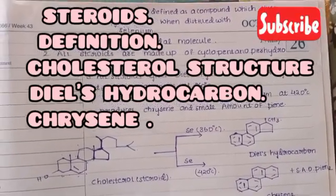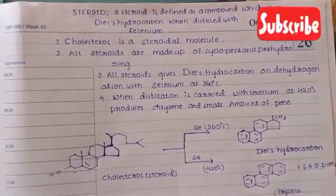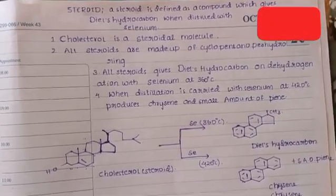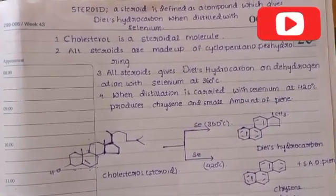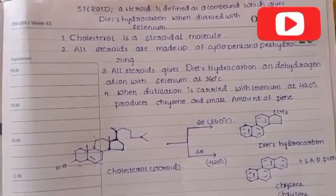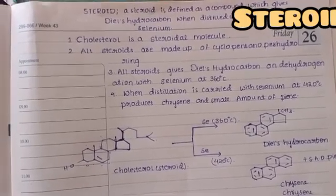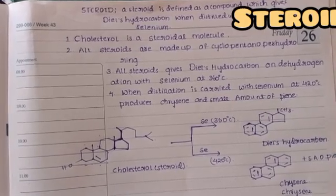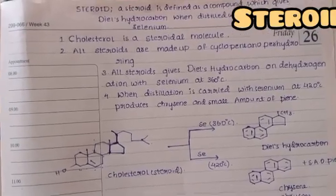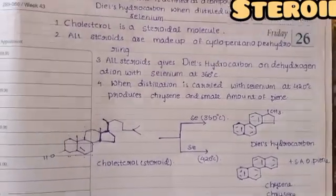Hello everyone, welcome back to my channel of pharmacy. If you are watching this channel for the first time, be sure to subscribe and comment. This video is about steroids. A steroid is defined as a compound which gives Diels hydrocarbon when distilled with selenium. When it is distilled with selenium, it gives the steroidal compound.